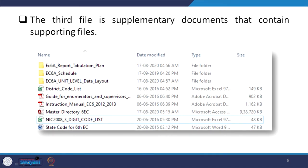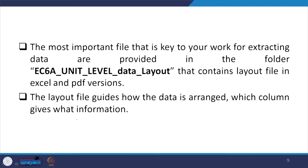NIC classification is also important — enterprises without NIC classification are meaningless. There must be some standardization and classification. Three-digit classification information is given in the sixth economic census dataset. The focus here is to understand the layout file, and the most important file for extracting data is provided in the folder called EC6A — that is the EC6 economic census 6A underscore unit level data layout.